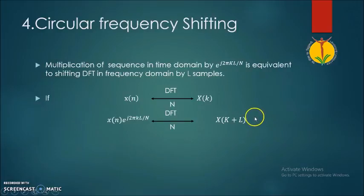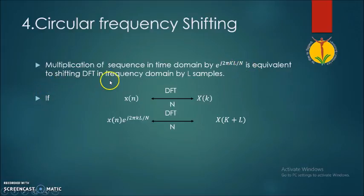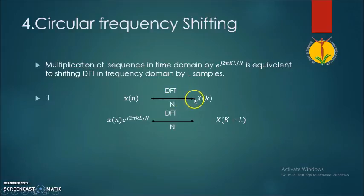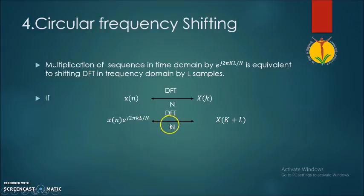The fourth property is circular frequency shifting. It indicates that the multiplication of a sequence in the time domain by e raised to j2πkl divided by N is equivalent to shifting the DFT in the frequency domain by l samples. So if x(n) has DFT X(k), then multiplying x(n) by e raised to j2πkl/N and taking its N-point DFT gives X(k) shifted by l samples in the frequency domain.